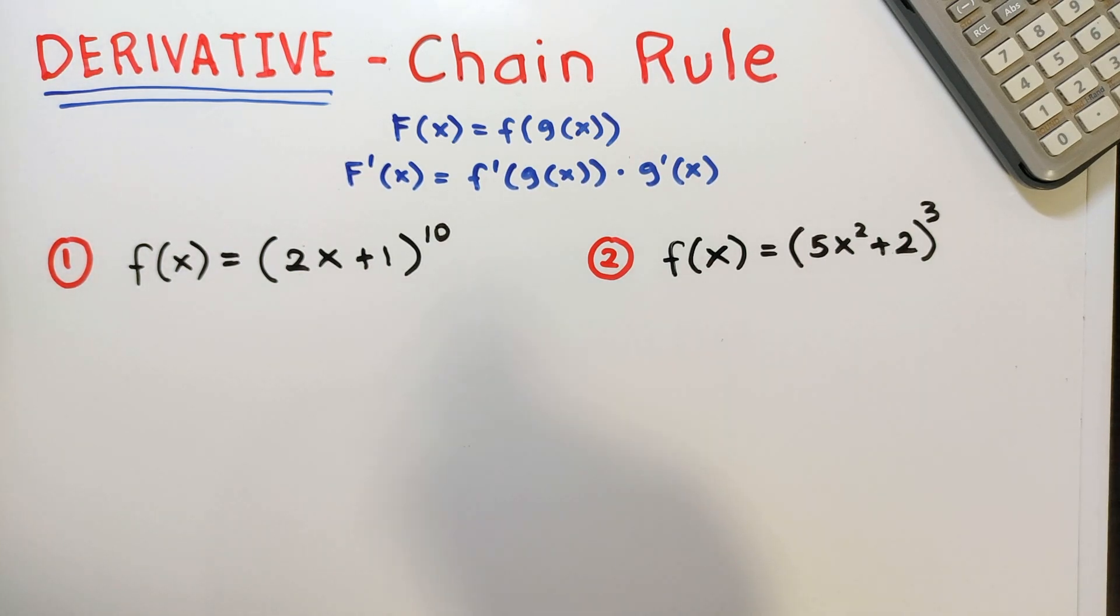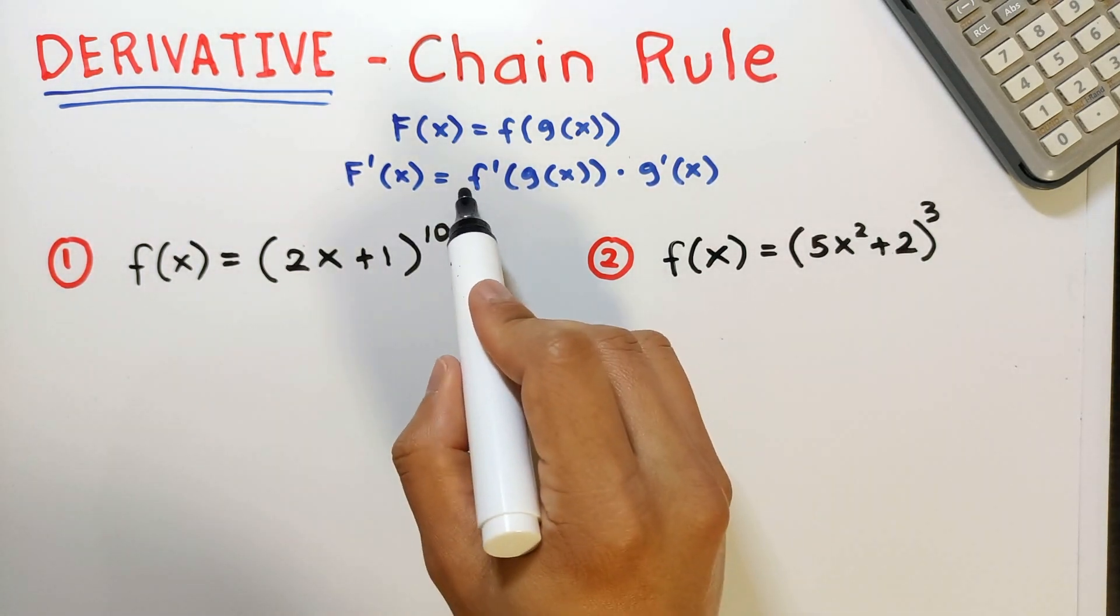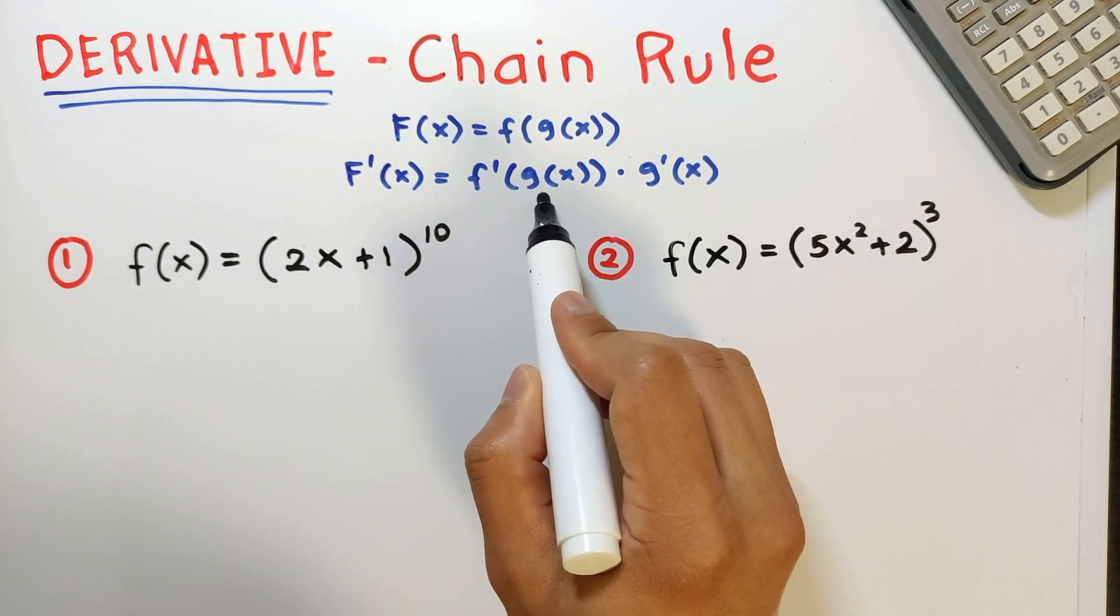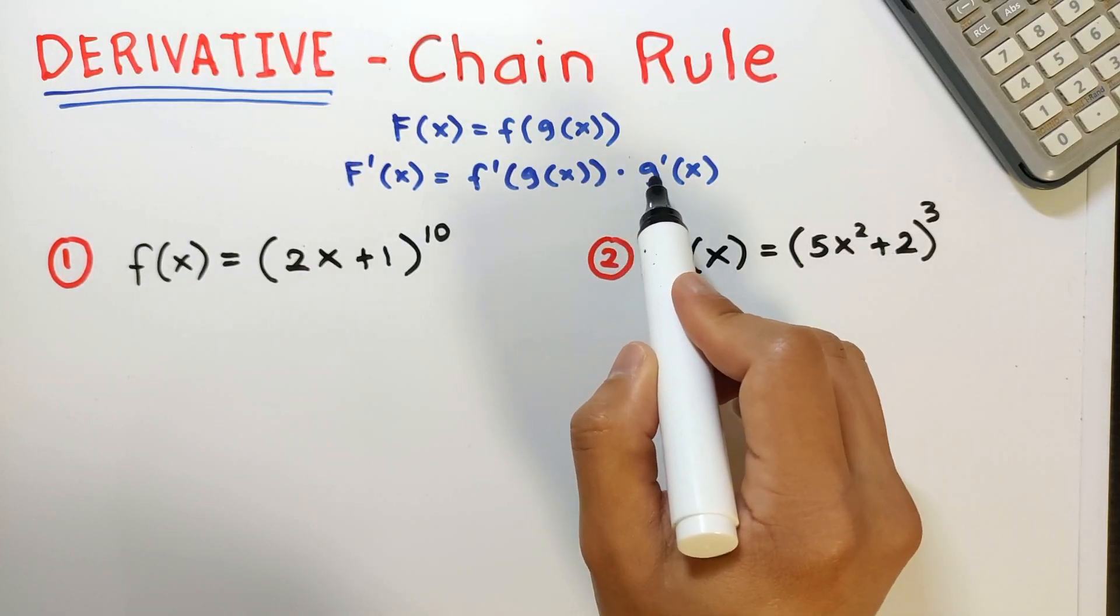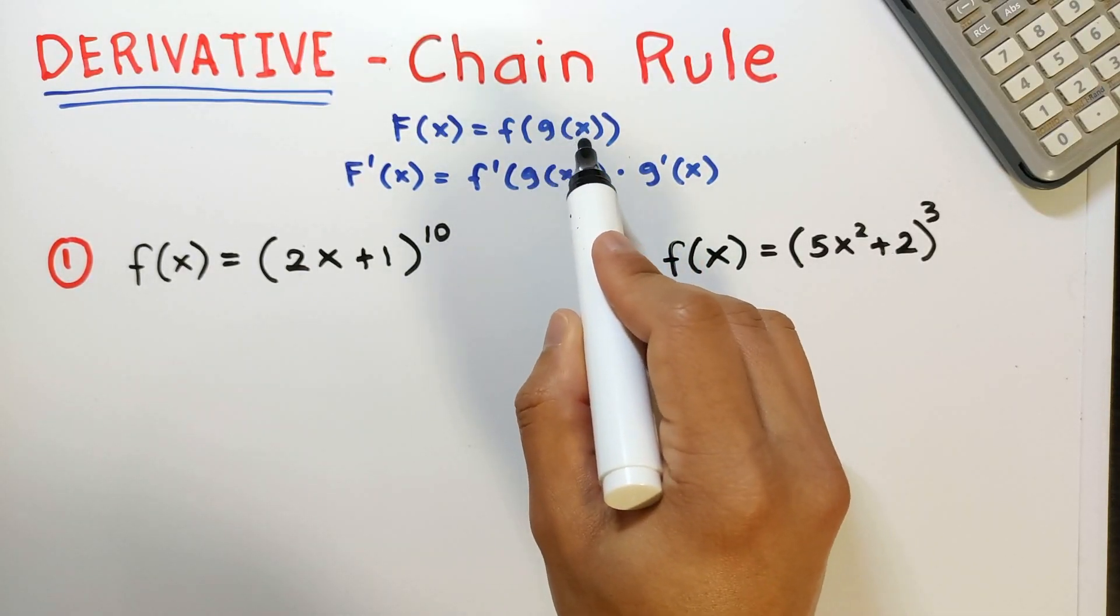In simple terms, you first differentiate the outer function f with respect to g and then multiply it by the derivative of the inner function g.